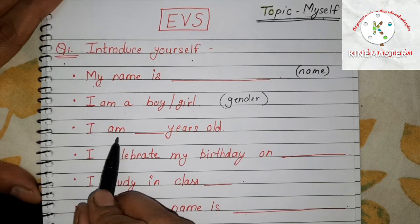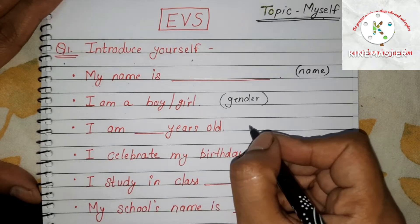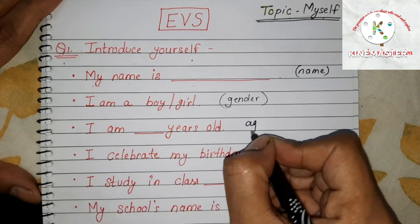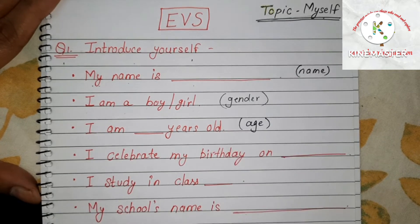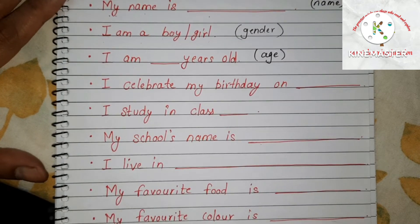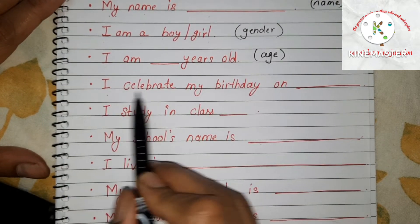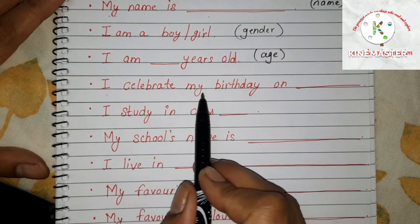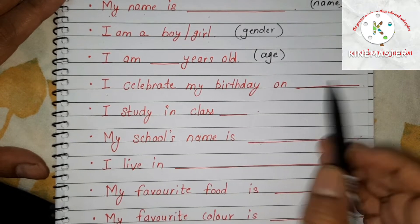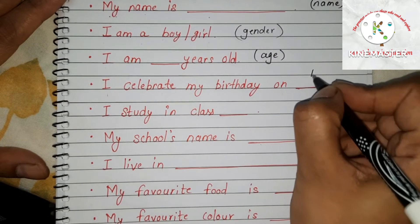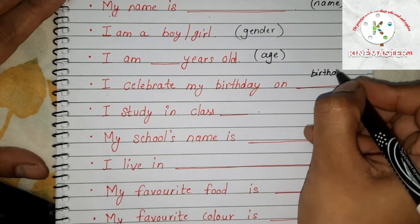Next is 'I am blank years old,' where the child has to write his age, like 6 or 7. Then 'I celebrate my birthday on,' where the child has to write his or her birth date.